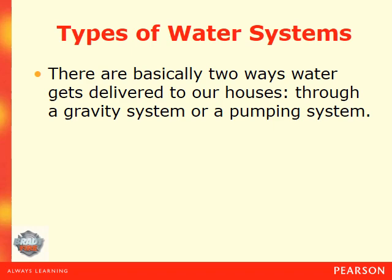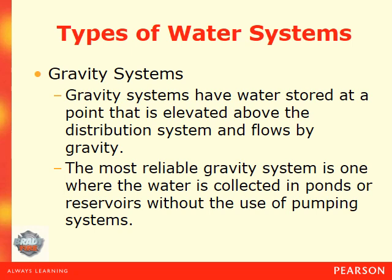There are two basic ways water gets delivered to our homes and hydrants: one is through a gravity system, the other is through a pumping system. Gravity systems have water stored at a point elevated above the distribution system and flows by gravity — a good example being a reservoir high up on a hill or mountain, with feeder lines going into the community. Other examples are the water tanks you see throughout your community. The most reliable gravity system is one where water is collected in ponds or reservoirs without the use of a pumping system.